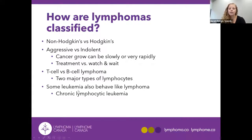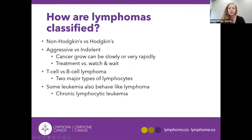Another way to classify lymphoma is based upon the lymphocyte that your cancer started in. There are two major types of lymphocytes: T and B cells, and these cells both help fight off infection in your body in different ways. A third way to classify lymphomas is that some leukemias are classified as lymphoma because of how these cancer cells behave. A common example is chronic lymphocytic leukemia, which behaves very similarly to some indolent forms of non-Hodgkin's lymphoma.